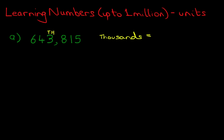Notice it is one, two, three — it's the fourth one. So there are three thousands in this number.